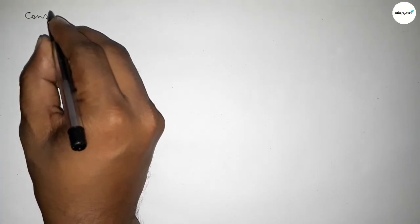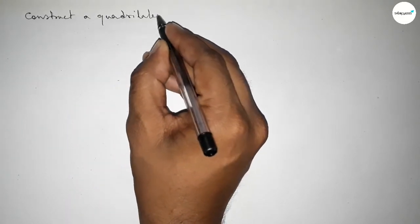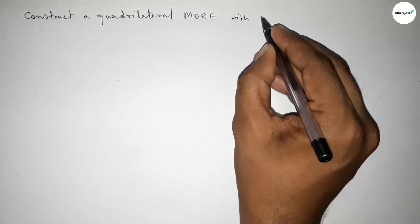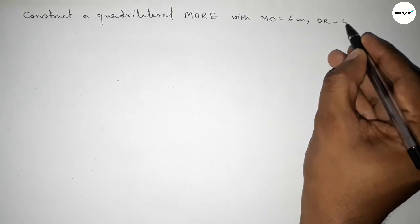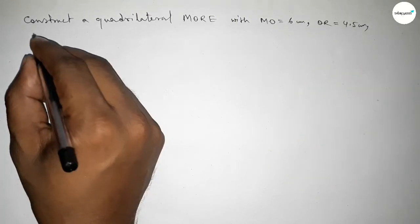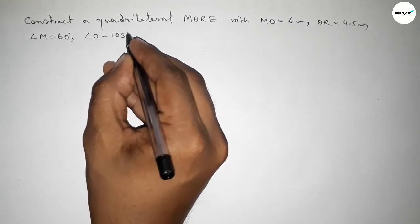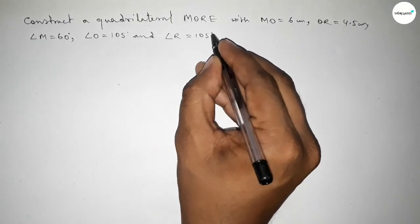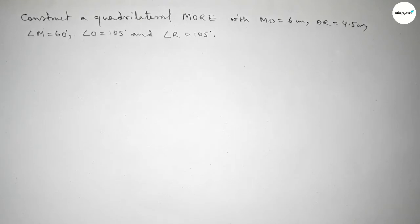Hi everyone, welcome to SISR Classes. Today in this video we have to construct a quadrilateral MORE with given side MO equal to 6 centimeter, OR equal to 4.5 centimeter, angle M equal to 60 degree, angle O equal to 105 degree, and angle R equal to 105 degree. So let's start the video.